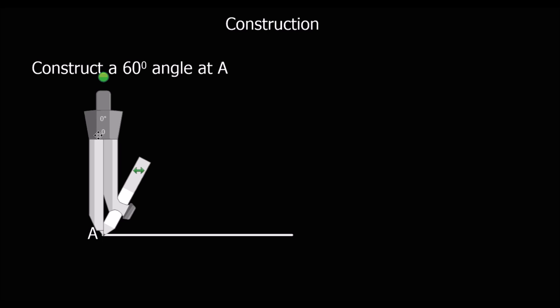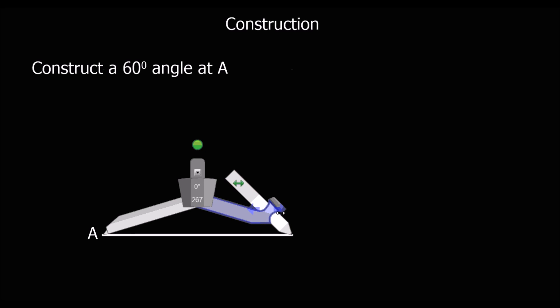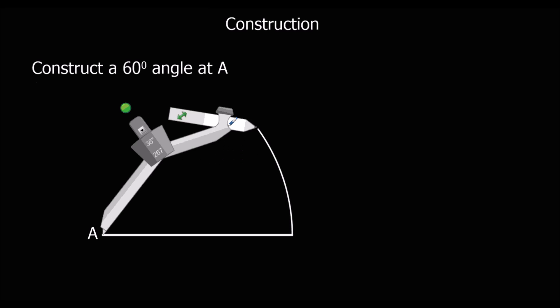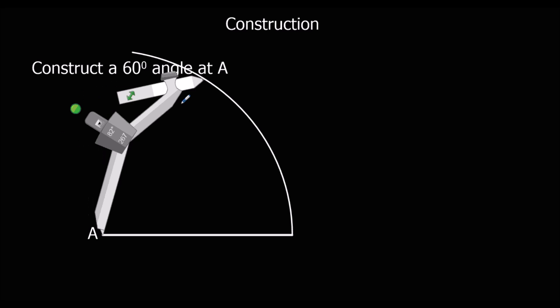We know an equilateral triangle has got three 60-degree angles. There we go. We've got this same length here and we're going to draw that one along to the top.